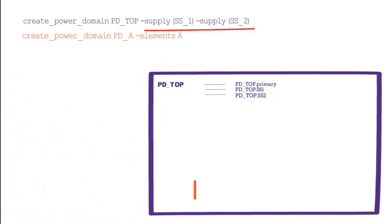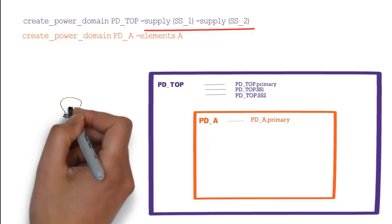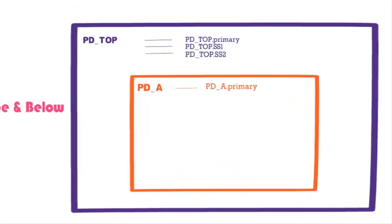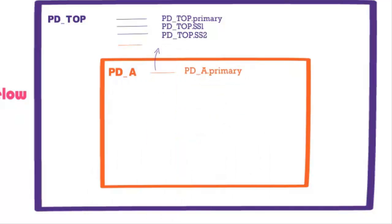The supplies are available in all power domains in the same scope and below. So PD_A.primary is available in PD_TOP. Likewise, the supplies in PD_TOP are available in PD_A. This will create unreasonable expectations for power grid design during physical implementation.